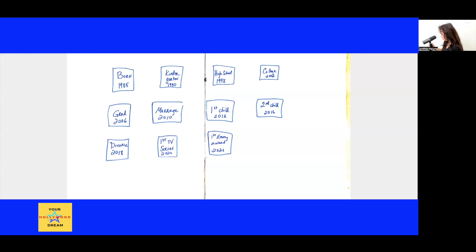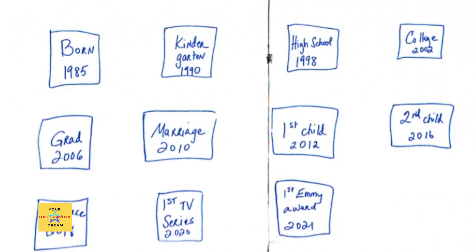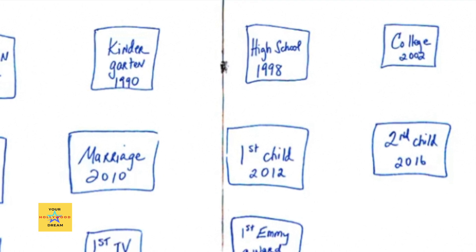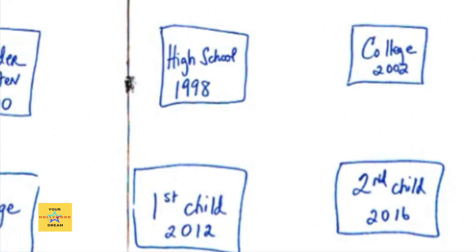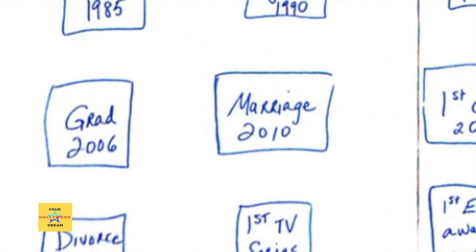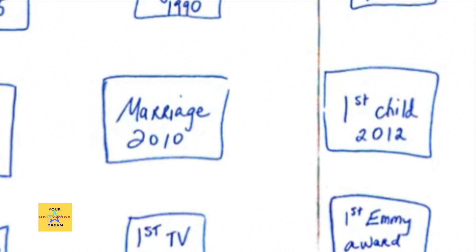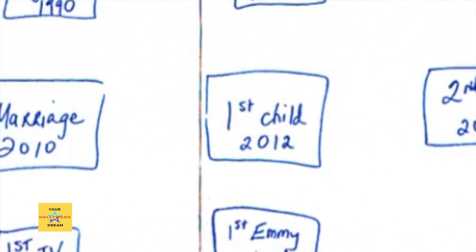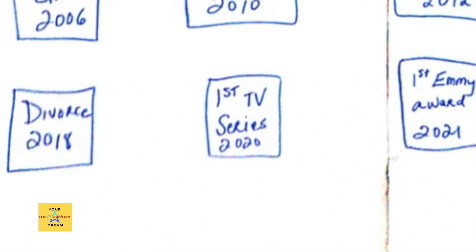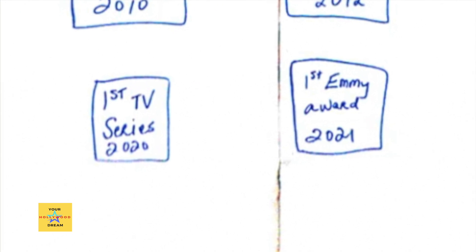Let's take a look at the board. I put down some blue boxes. I'm going to use an example — let's say it's you. You were born in 1985. Kindergarten in 1990. High school came around in 1998. College came around in 2002. You graduated from college in 2006. You got married in 2010. You had your first child in 2012, your second child in 2016. You divorced in 2018. You had your first TV series in 2020, and you won your first Emmy in 2021.